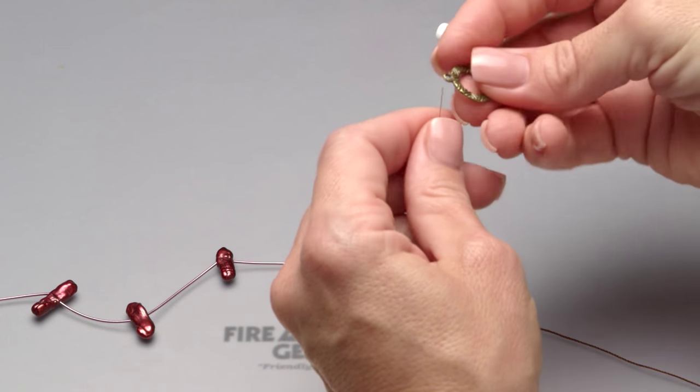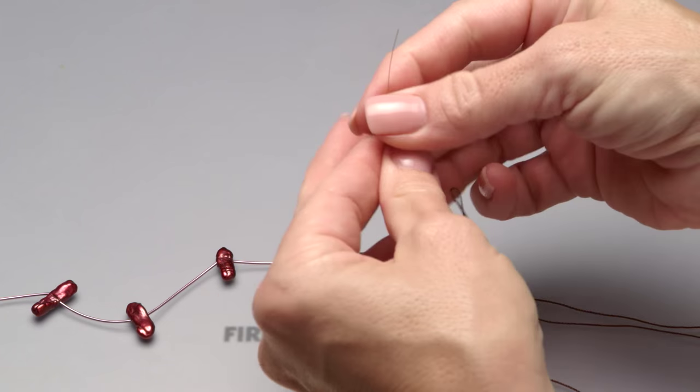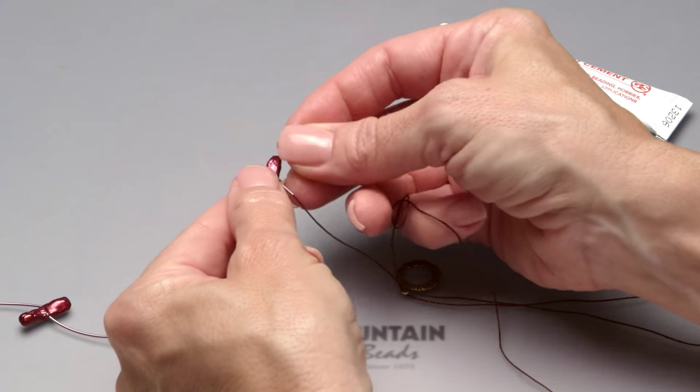Thread on the loop of our other half of the clasp and then pass the needle back through the last bead in your design.